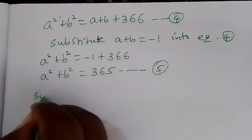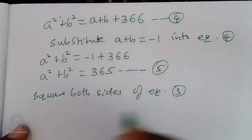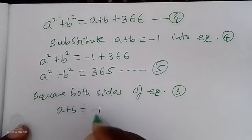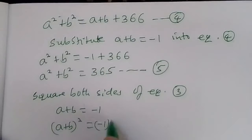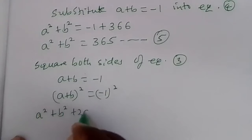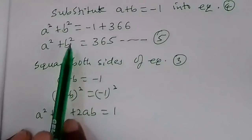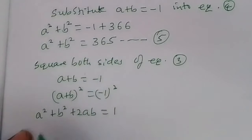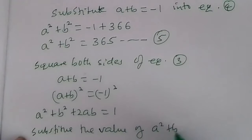Now square both sides of equation 3. Equation 3 is a plus p equals negative 1. Squaring both sides: a plus p squared equals negative 1 squared. By binomial expansion we have a squared plus p squared plus 2ap equals 1.